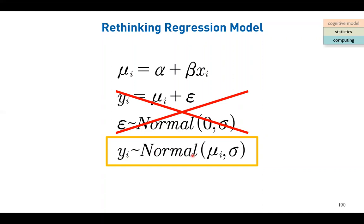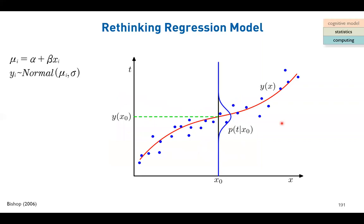We can forget about that form and instead write: y, the true data, is normally distributed around the predicted mu with a variance of sigma. To illustrate on a graph: assume some kind of regression line - it doesn't matter if straight or curved. The x-axis is the predictor, the independent variable. The y-axis is the dependent variable, what we are trying to predict. The red curve is the regression line.